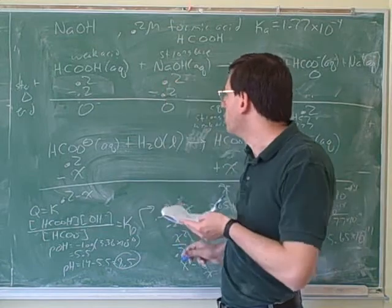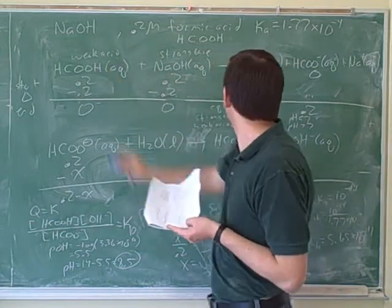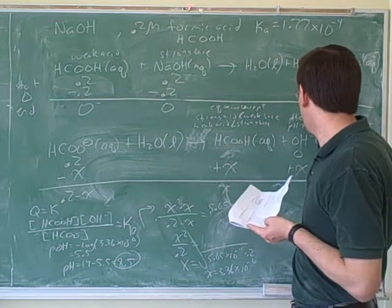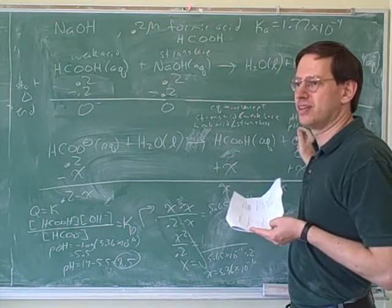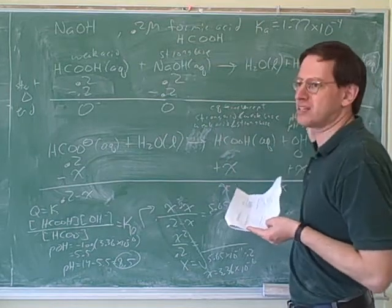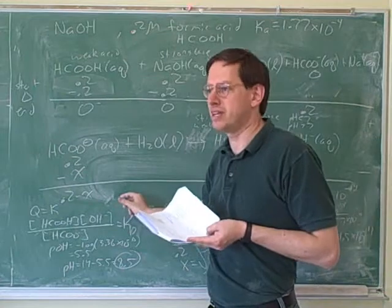We went to the equivalence point, so we converted all of the weak acid into weak base. Yeah. And that explains why, in that case, we ended up with a basic solution. We started with weak acid, but it was completely converted into weak base. And then that weak base gave us a basic solution.